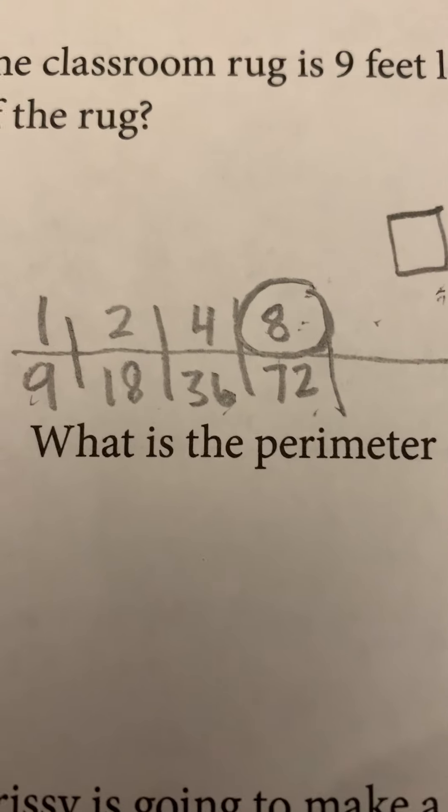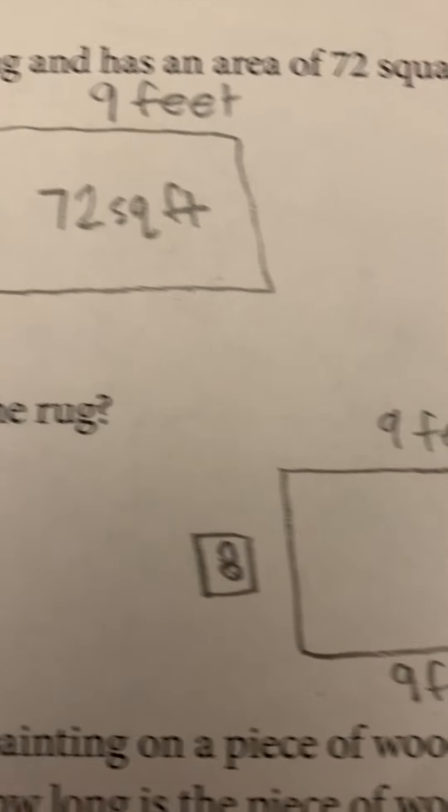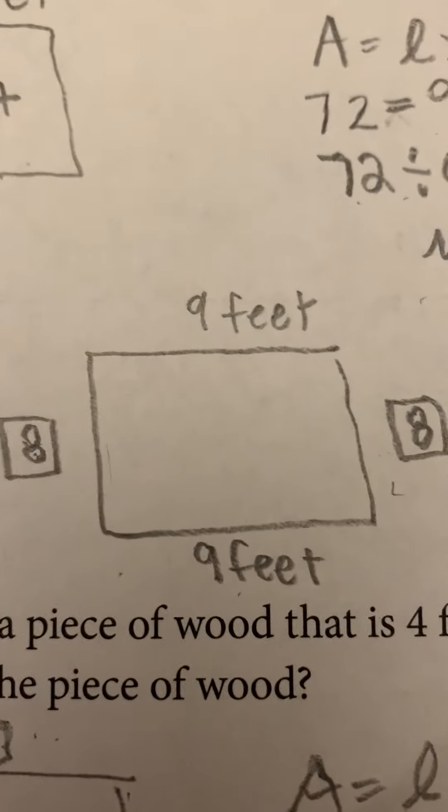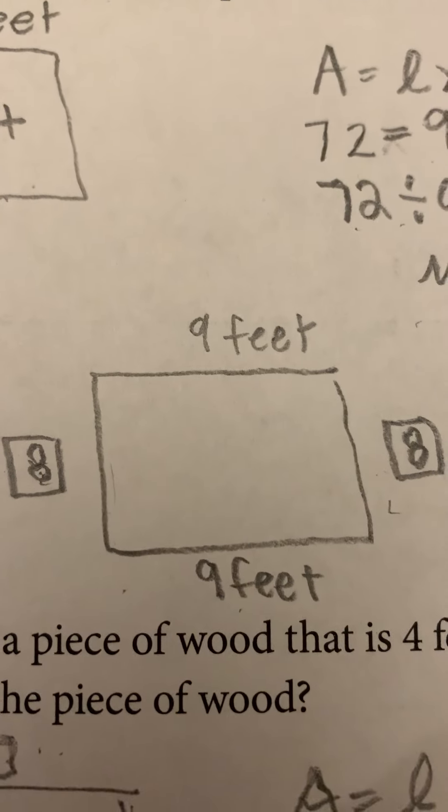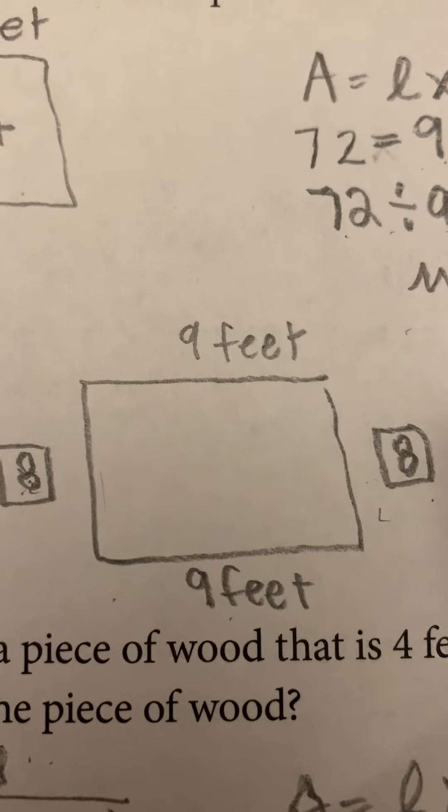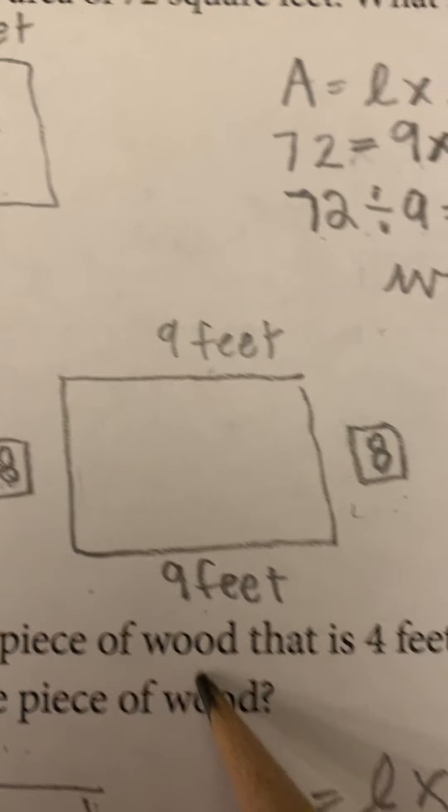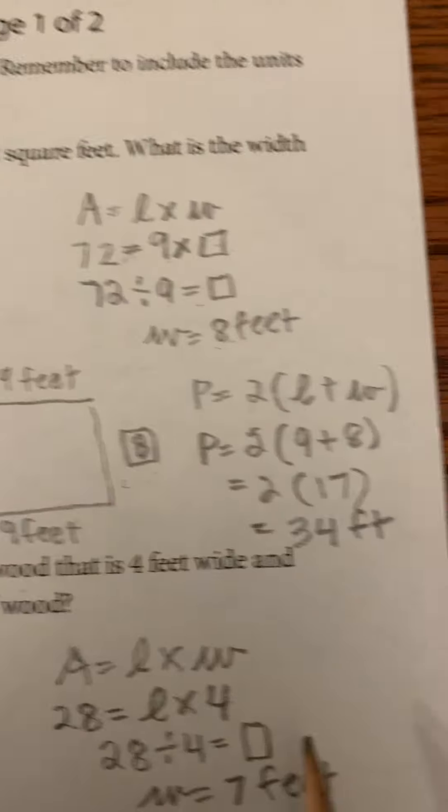Then the next question is what is the perimeter of the rug? So here's the rug and I used my answer from above to say that these sides were eight. If one side is eight, the other side is eight. If one side is nine, the other side is nine. And so I did my formula.